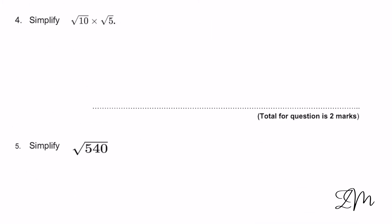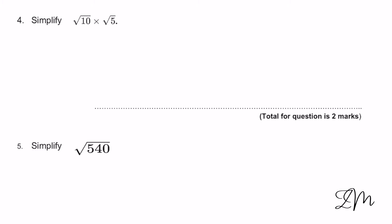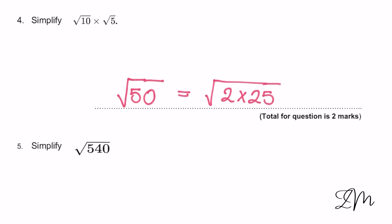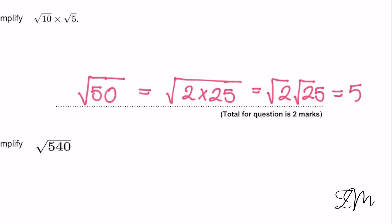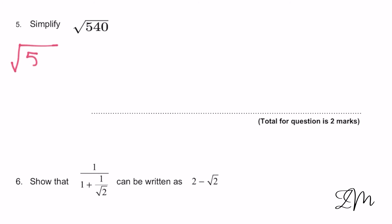Okay, next question. We've got that rule — root A times root B is root AB — so we can multiply these: √10 times √5 is simply √50. Now, can we simplify that? Well, 50 is the same as 2 times 25, and I've chosen that because I know √25 is exactly 5. So we get 5√2. Now we've got √540.